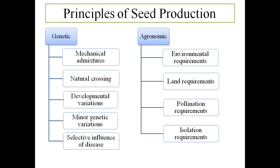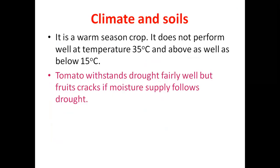Agronomically, what can affect seed production: (1) environmental requirements — if you don't give water or proper soil, the seed will not perform; (2) pollination requirements — if it's a cross-pollinated crop and no pollinators are present, the female flower will shed without reproducing; (3) isolation requirements — you must maintain proper isolation so that cross-contamination with other seed material does not occur.